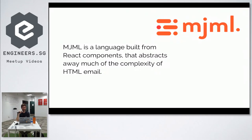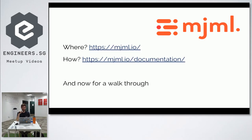A little background: MJML is built from React components, and that's how they've been able to create their own markup language. The main idea is to create responsive email templates. The point of it is to abstract away a lot of the complexity that comes with writing email that works in email clients. And that is the end of the slides, and now I'm just going to do a presentation about how you would set it up and get it to work.